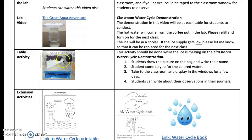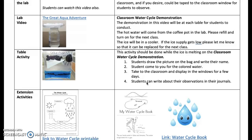They could do all this with markers that I'll have at the table. I'll have baggies at the table. When it comes to adding the colored water, have them come to you — not too much, because if it's too heavy it's not going to stay taped to the window, so probably about half. Then, as an extension, they could write what they observe each day in their journal.